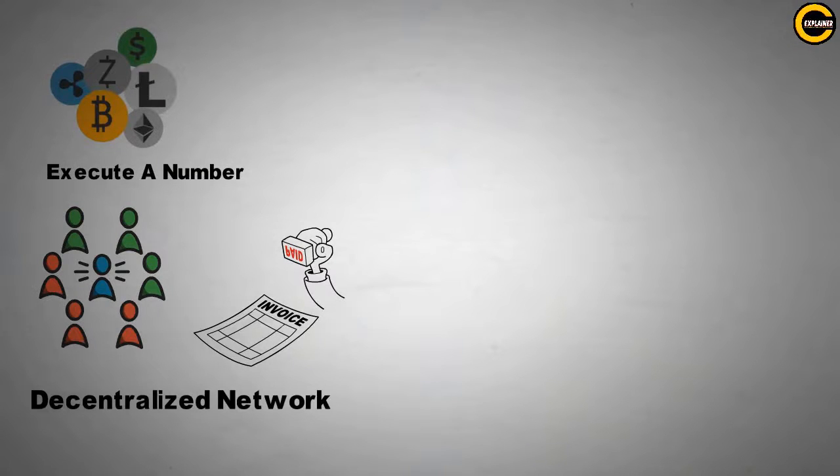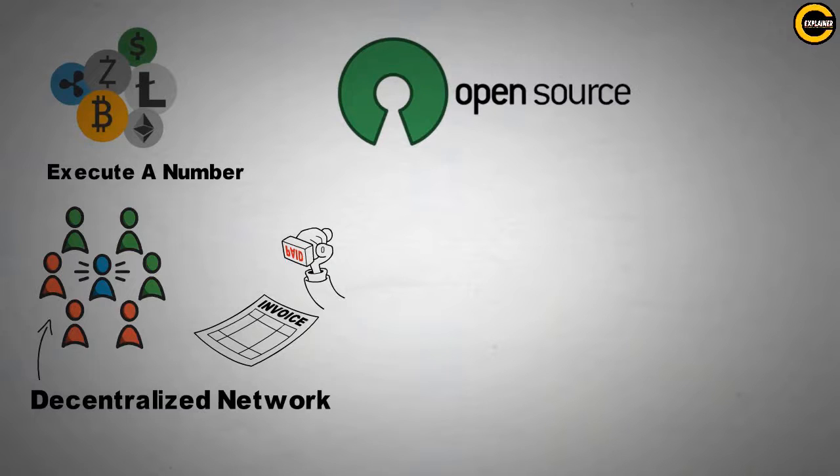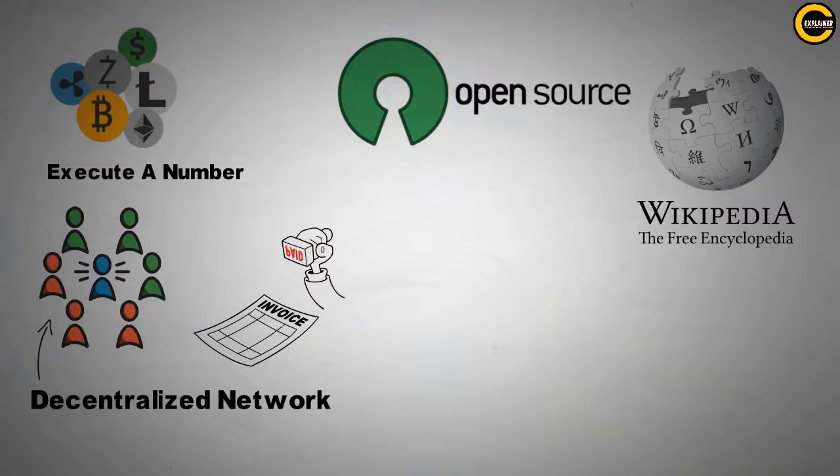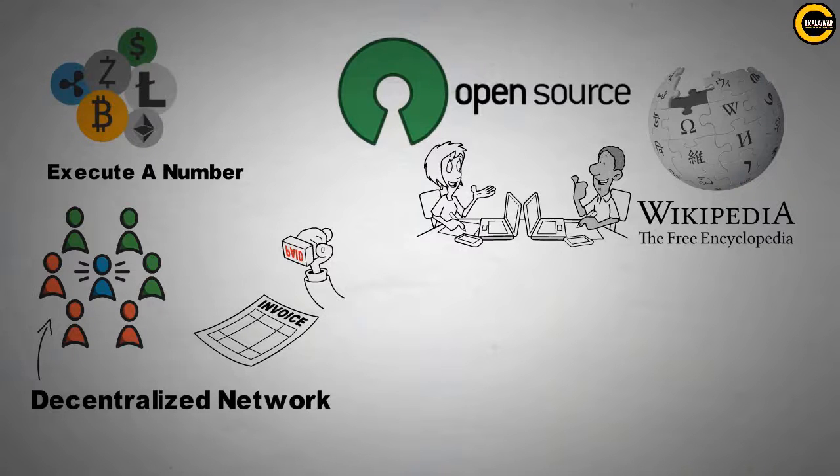A DAP exists as a decentralized network run by users with no central control or single point of failure. This means they are open source and the whole community can contribute. As such, there needs to be consensus. For example, imagine Wikipedia where all the contributors have to agree on whether Freddie Mercury was from India or not, or whether a Caesar salad was invented in 1924 or in ancient Rome.